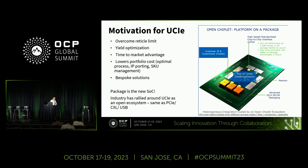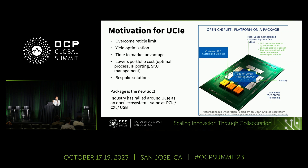The motivation for UCIE is that we are all up against the reticle limit. If you look at pretty much volume CPUs, GPUs, and what have you, they're all built out of chiplets — whether server or client, doesn't matter. The reticle limit is a concern. Also, as we move forward with more advanced process nodes, yield is a problem. Smaller dies yield better, so it's much better to get a bunch of chiplets and package them together as a monolithic entity.